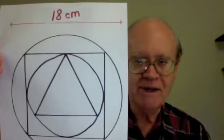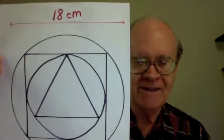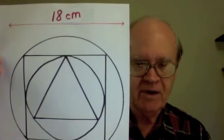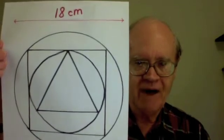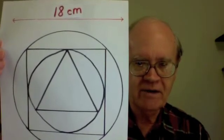Suppose the diameter of the outer circle is exactly eighteen centimeters. Your challenge is find the exact length of one side of the triangle.